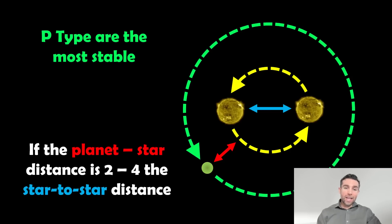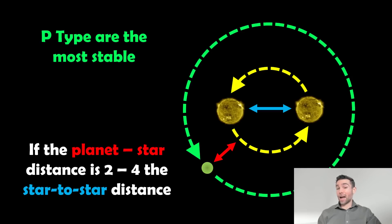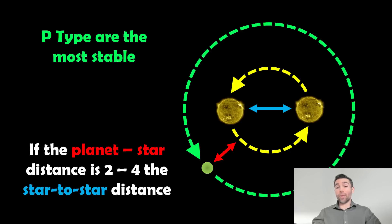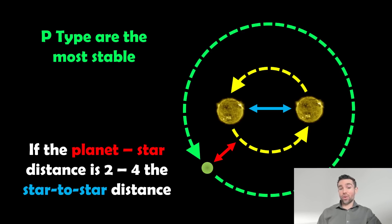P-type orbits are the most stable. They can exist with long-term stability — the planet going around the outside and remaining relatively undisturbed. The condition is that the planet needs to be sufficiently far away from the two stars that it doesn't receive significant perturbations as the stars orbit each other. As long as the planet-star distance is around two to four times the star-star distance, they're typically going to be relatively stable — which is good, because that allows for long-term stability and potentially a habitable planet.